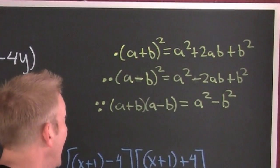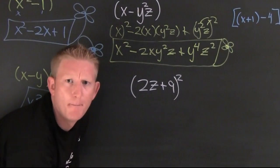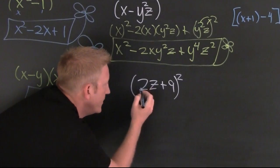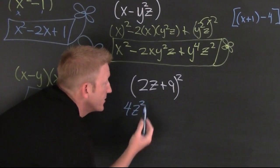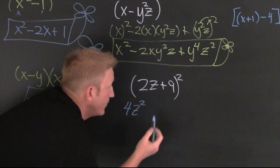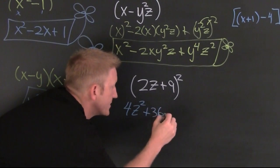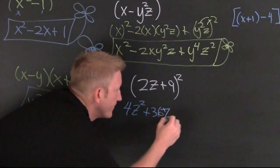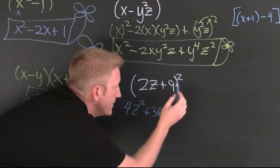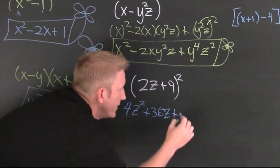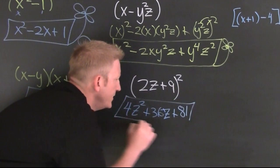Which one is this? It's claiming perfect square. 4z squared — because that's that one squared. This one times that one is 18, doubled is 36z. Plus 9 squared is 81. And you're done.